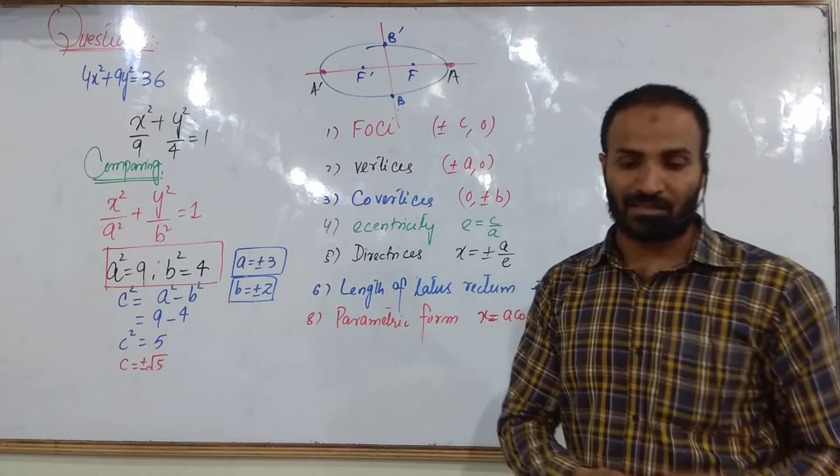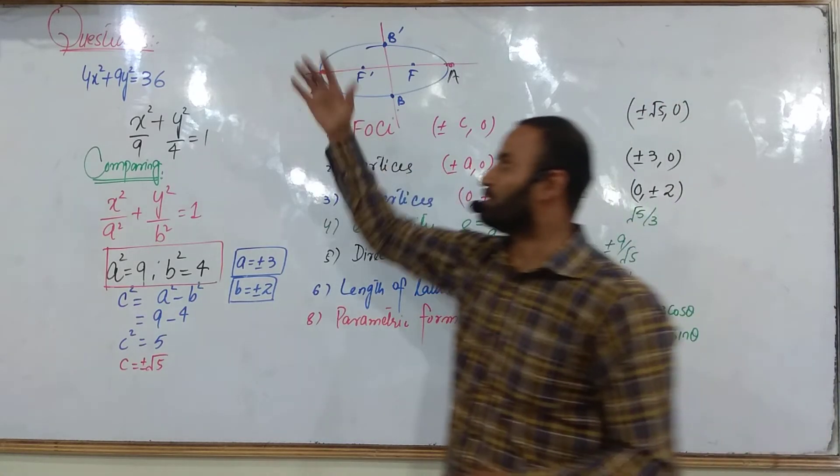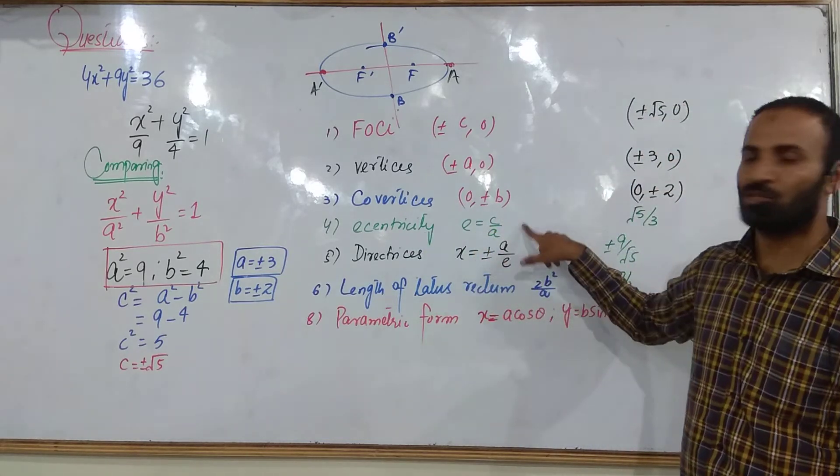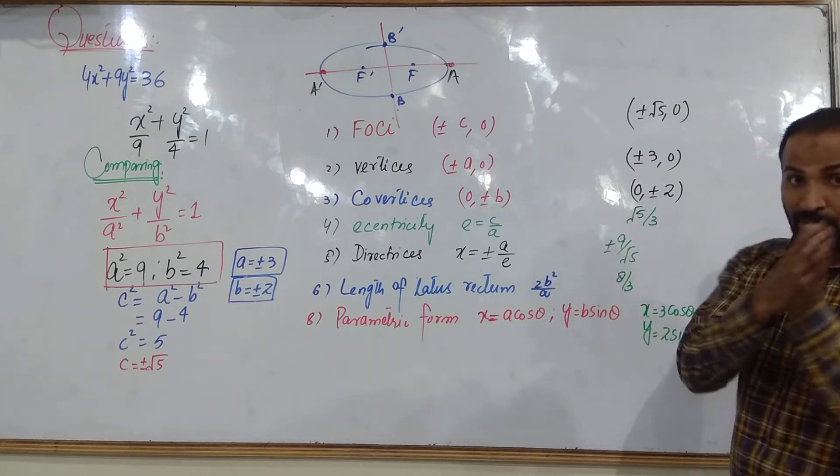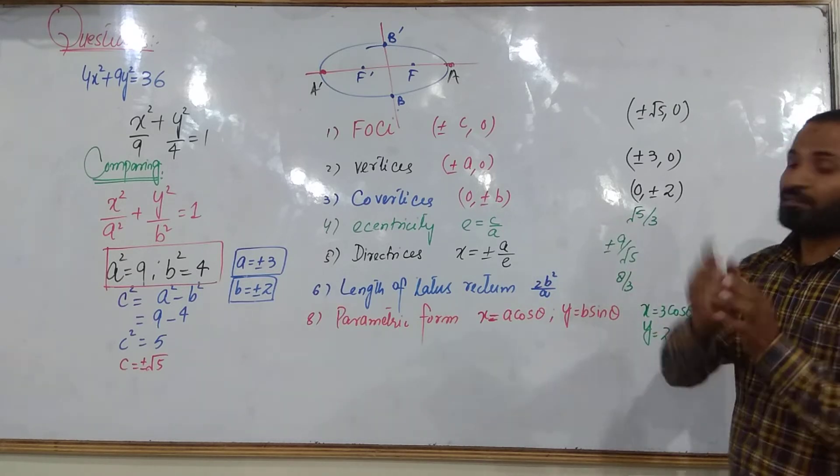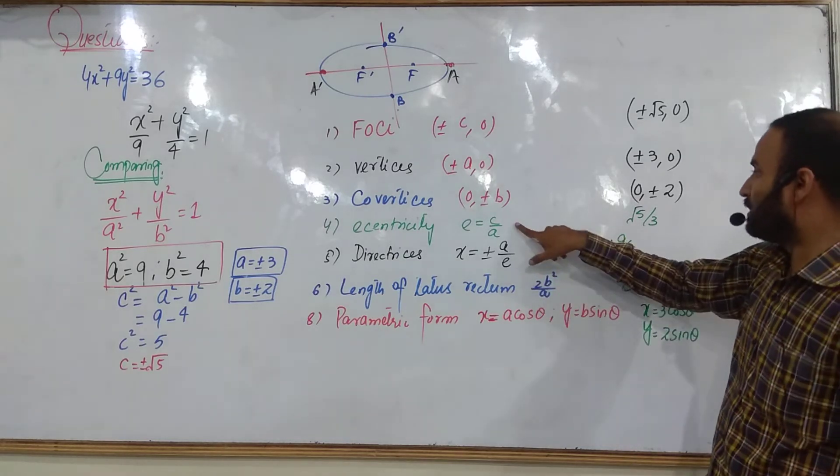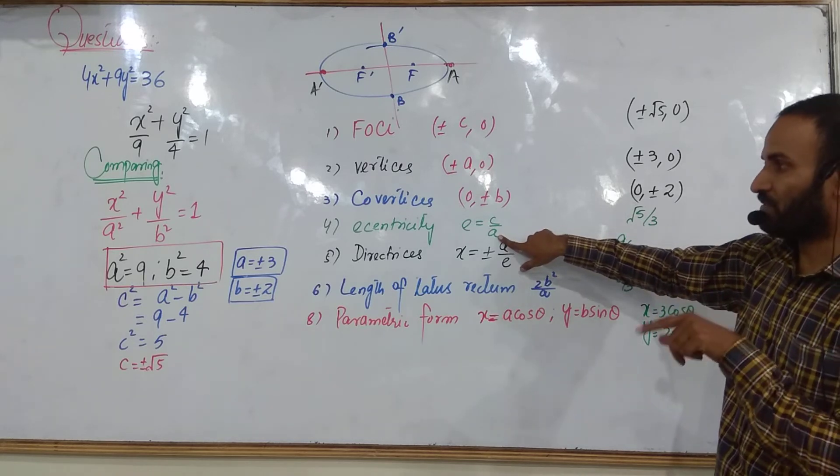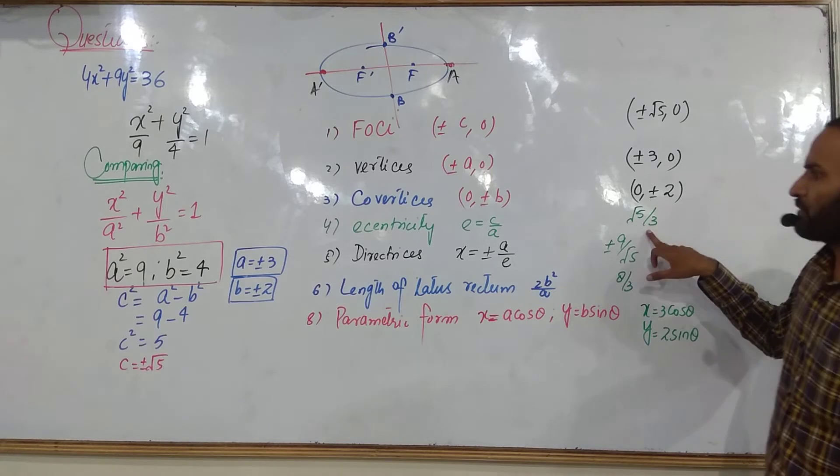If eccentricity is asked, what is the eccentricity of this data? So you just calculate E is equal to C/A. What is the value of C? What is the value of A? Remember one thing, eccentricity is always positive. It never becomes negative. So you can see here, I take the value of C positive, I take the value of A positive as well. So it becomes √5/3.